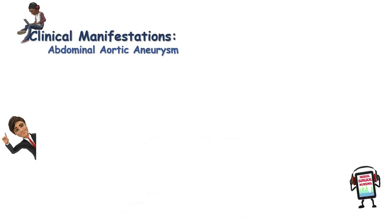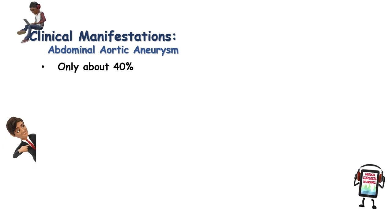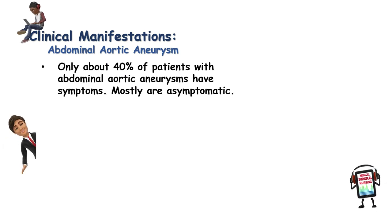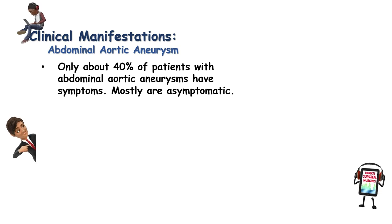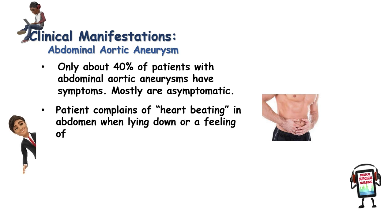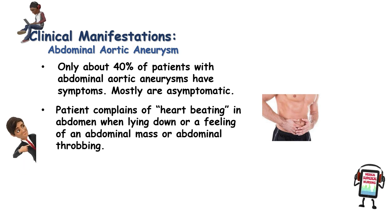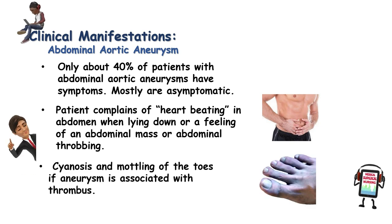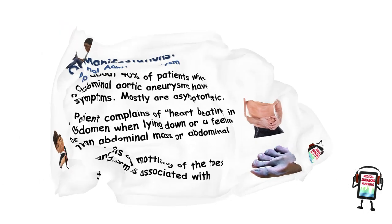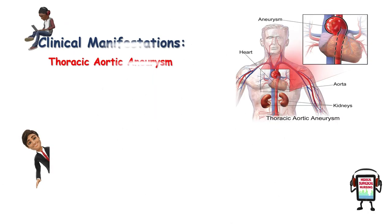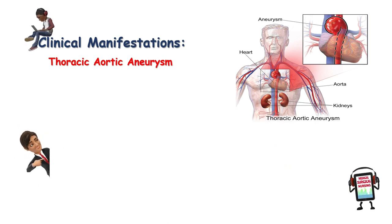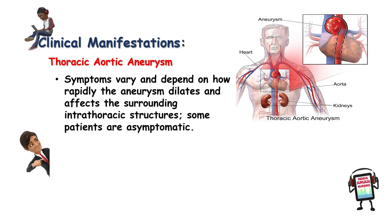Clinical manifestations of abdominal aortic aneurysm: only about 40 percent of patients have symptoms; most are asymptomatic. Patients may complain of a heartbeat sensation in the abdomen when lying down, or a feeling of an abdominal mass or abdominal throbbing. Cyanosis and mottling of the toes may occur if the aneurysm is associated with a thrombus.